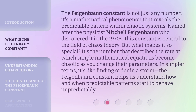The Feigenbaum Constant is not just any number. It's a mathematical phenomenon that reveals the predictable pattern within chaotic systems. Named after the physicist Mitchell Feigenbaum who discovered it in the 1970s, this constant is central to the field of chaos theory. But what makes it so special? It's the number that describes the rate at which simple mathematical equations become chaotic as you change their parameters. In simpler terms, it's like finding order in a storm. The Feigenbaum Constant helps us understand how and when predictable patterns start to behave unpredictably.